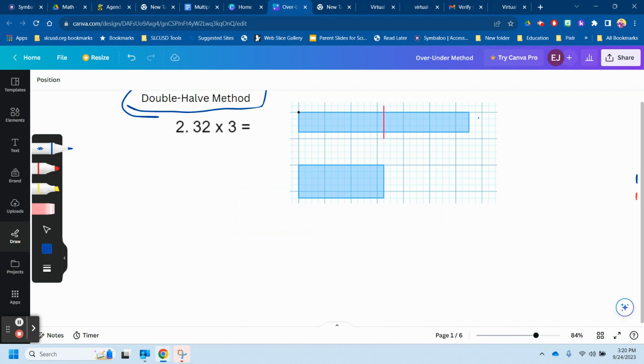So we have 32 times 3. Each one of these larger lines represents five smaller squares, segments, smaller segments. So this would be 32. So this is 32 times, and this is 3.